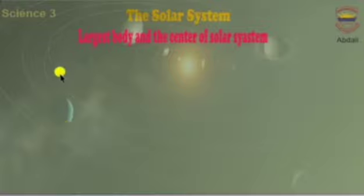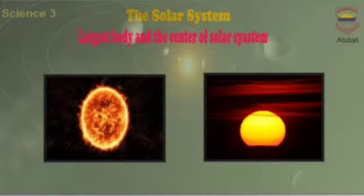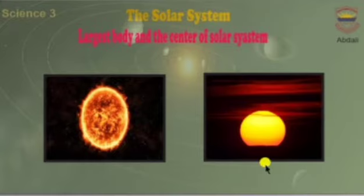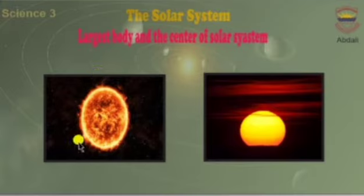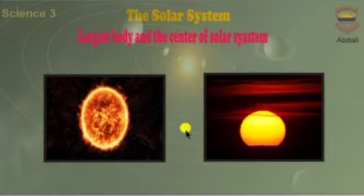What is the largest body and the center of our solar system? The sun is the center of our solar system. As you can see in this picture, the sun is the largest body at the center of our solar system.